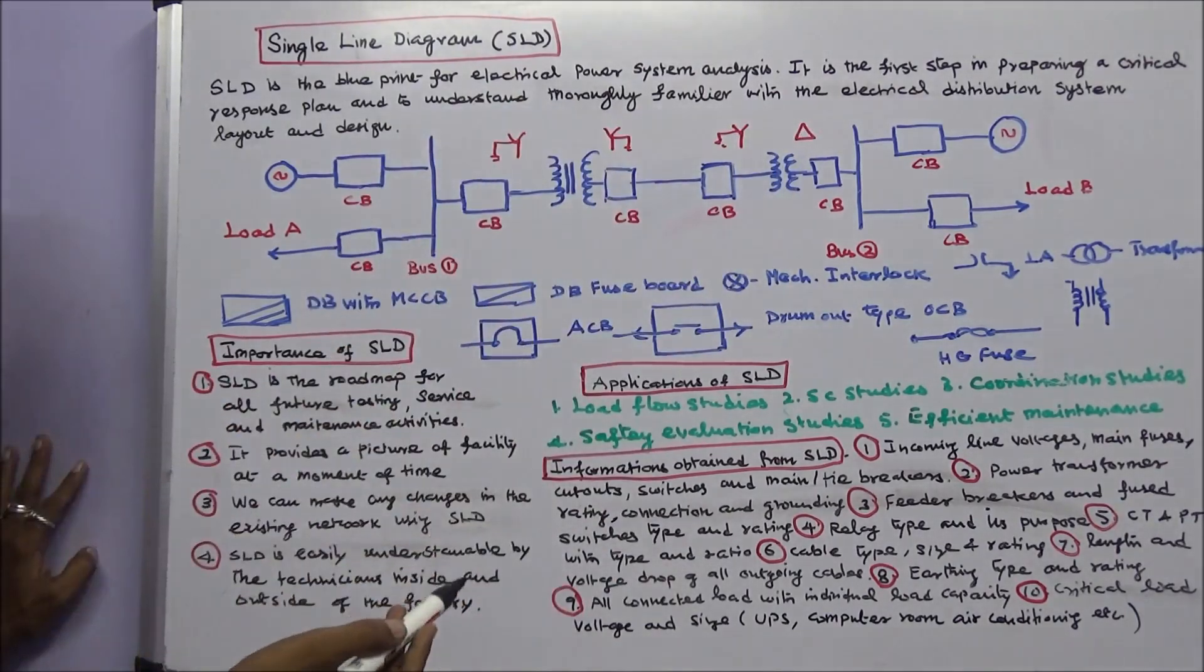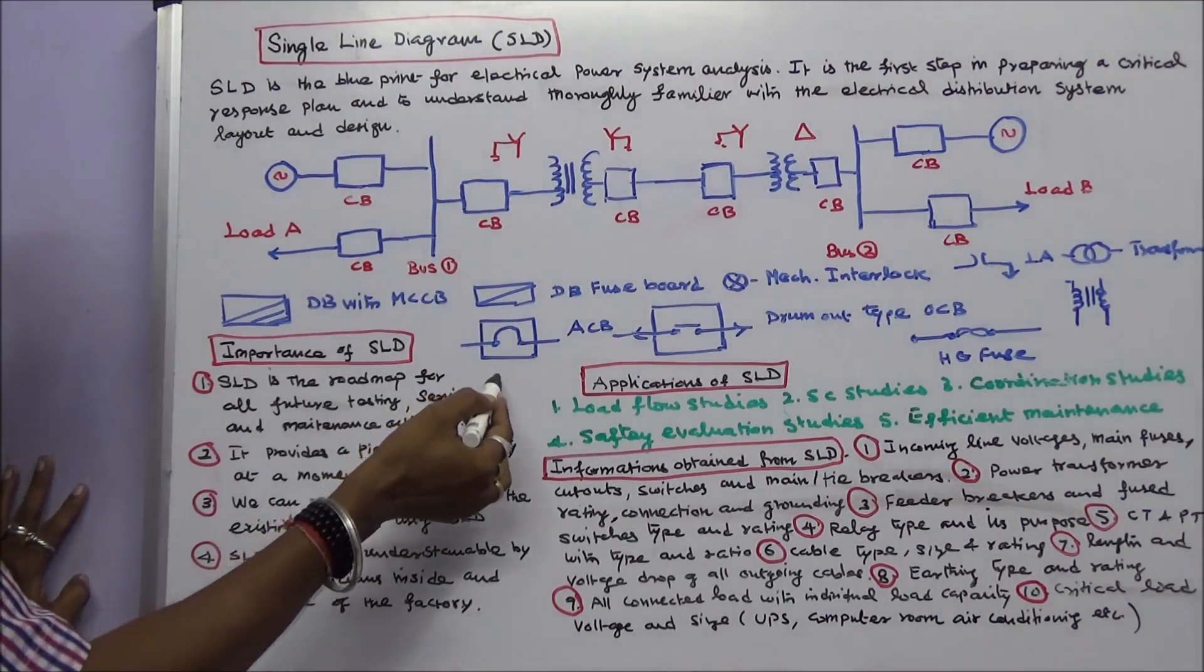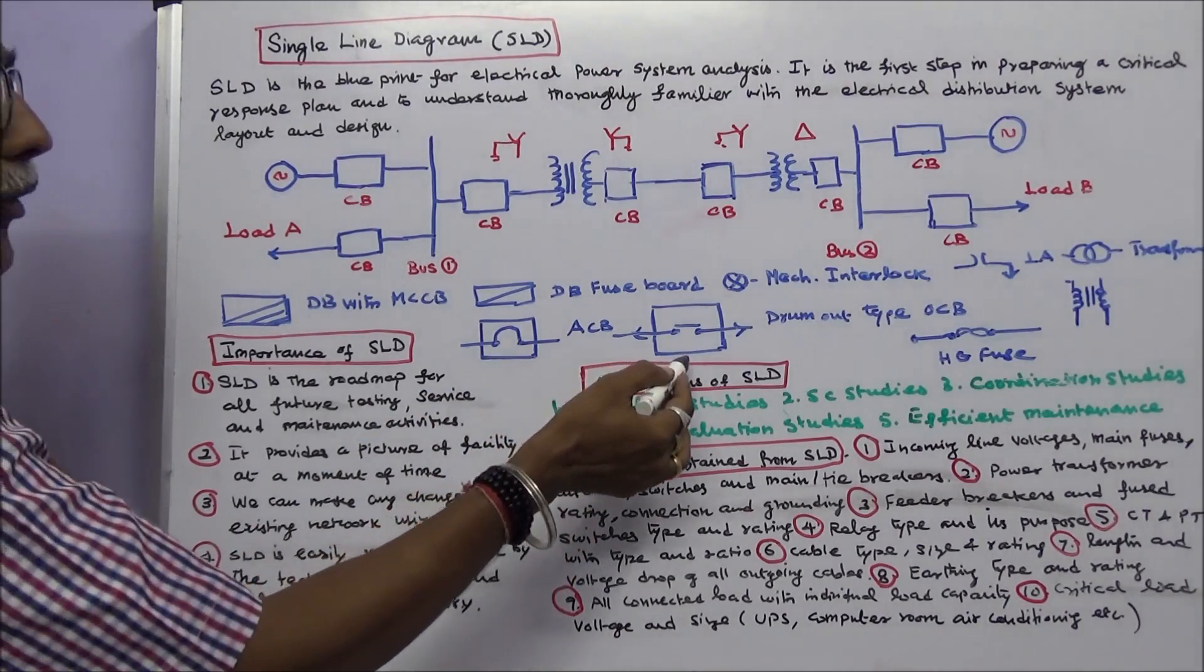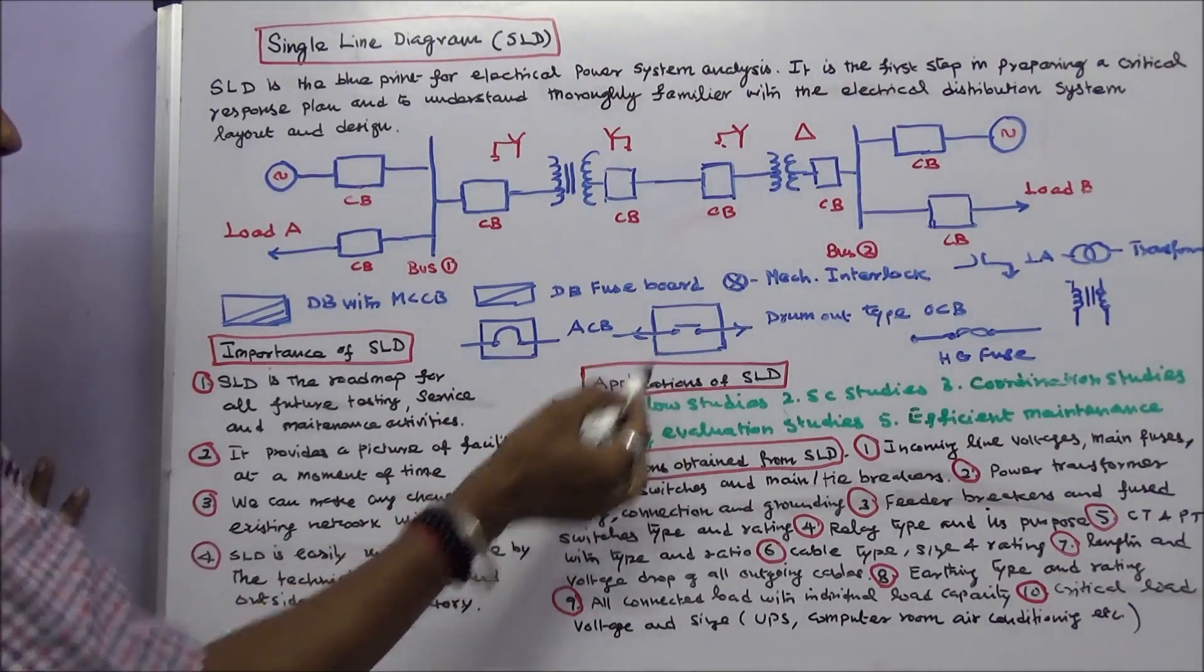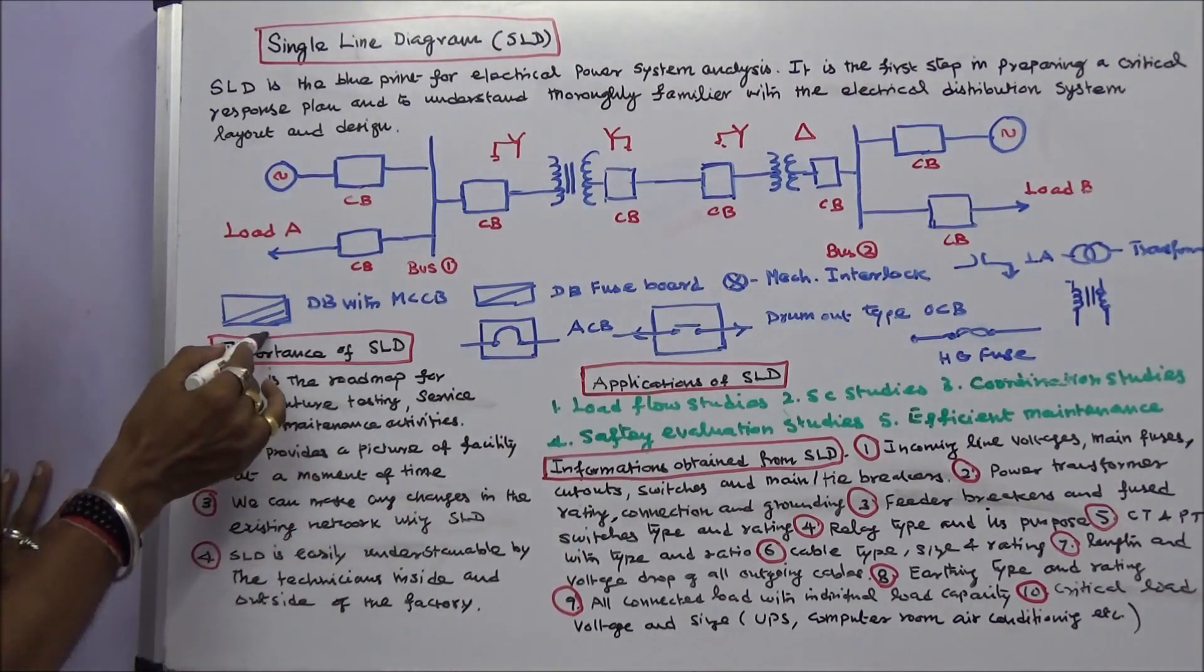All the equipment are protected with circuit breakers. This is a symbol of air circuit breaker, this is a drum-out type oil circuit breaker, and this is a distribution board with molded case circuit breaker.